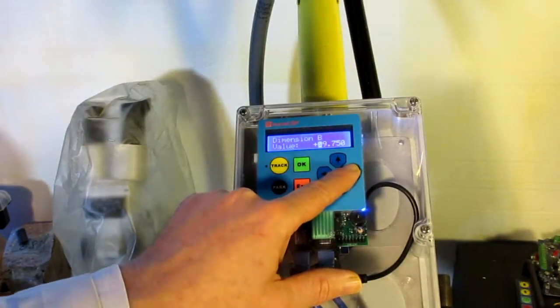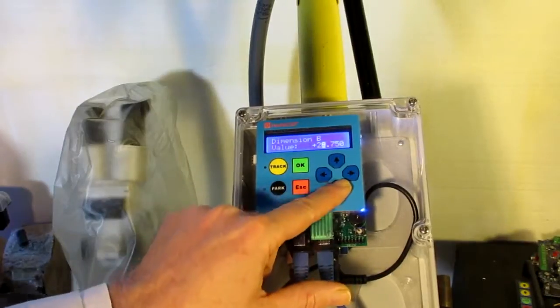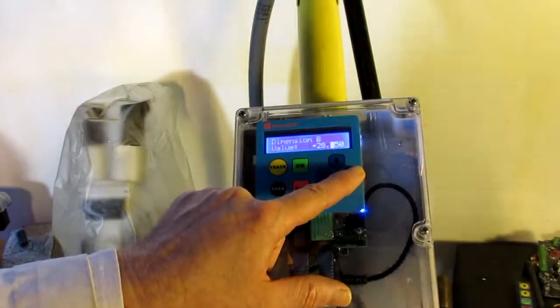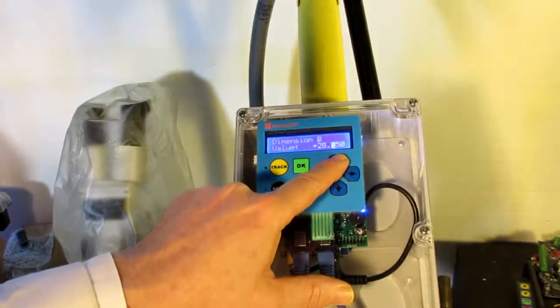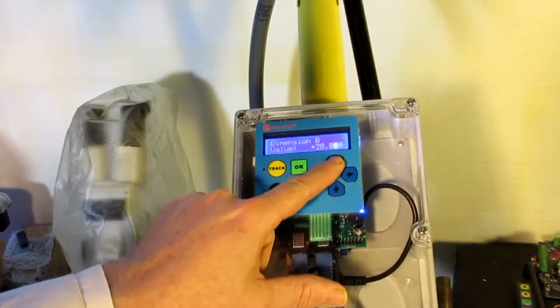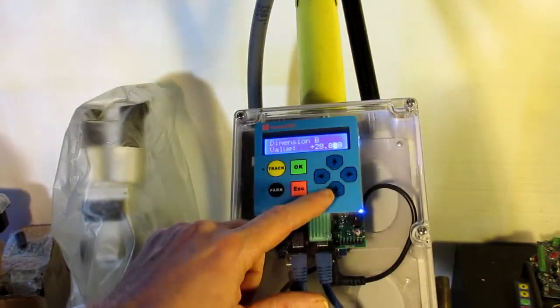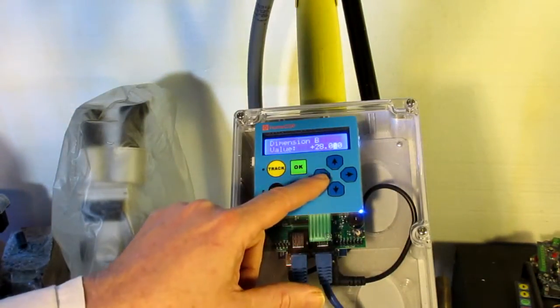So, our control arm measured to be 28 centimeters. It's actually part of the design when that was built.